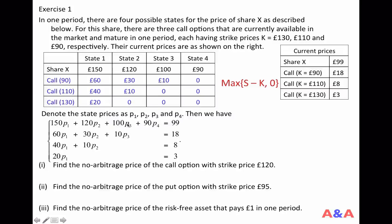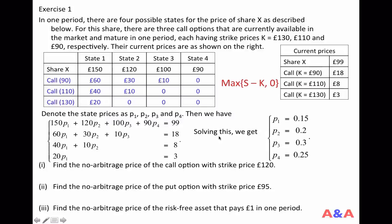Solving this system of equations is straightforward. The last equation gives you P1; substituting into the second-to-last gives P2; with P1 and P2, the second equation gives P3; and the first equation gives P4. Solving this, you get P1 = 15 pence, P2 = 20 pence, P3 = 30 pence, and P4 = 25 pence.